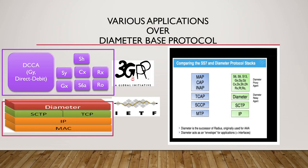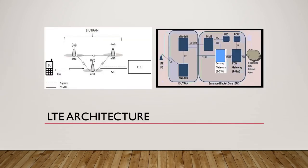As shown in the last few lectures, the diameter stack has MAC layer, then IP layer, then SCTP and TCP supporting the transport layer, and at the top is the application layer where the diameter protocol lies. I also explained the RADIUS protocol, which was the predecessor of the diameter protocol.